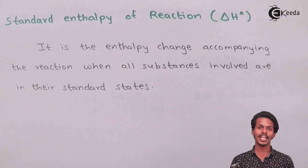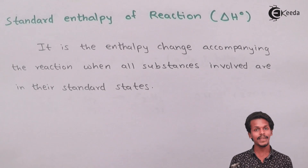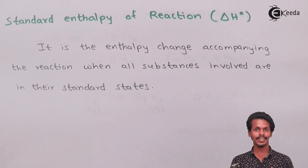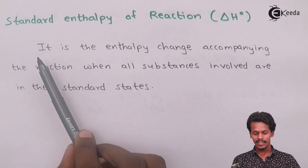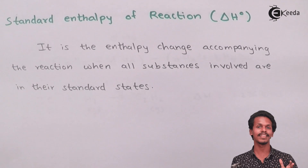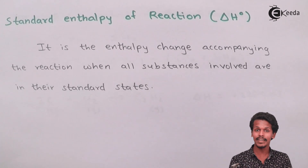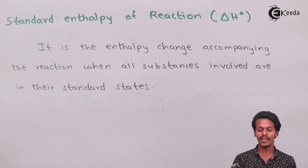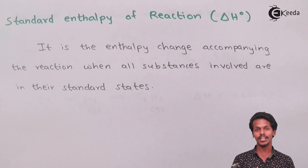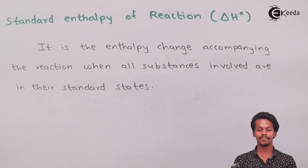Now we talk about the standard enthalpy of reaction. The difference between enthalpy of reaction and standard enthalpy of reaction is that in the standard case, conditions are set to standard values — pressure at 1 atmosphere and temperature at 25°C. It is defined as the enthalpy change accompanying a reaction when all substances are in their standard states. It is denoted by delta H⁰. In contrast, regular enthalpy of reaction may involve varying temperature and pressure.